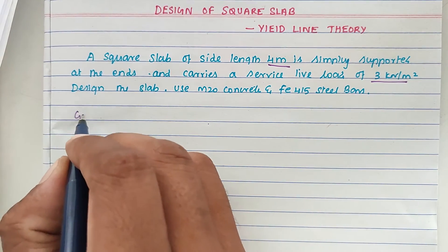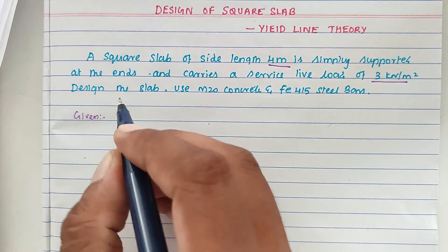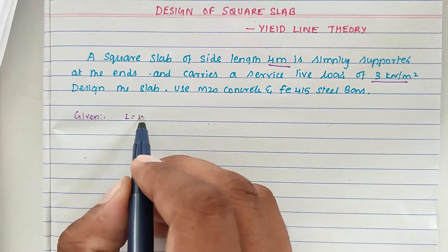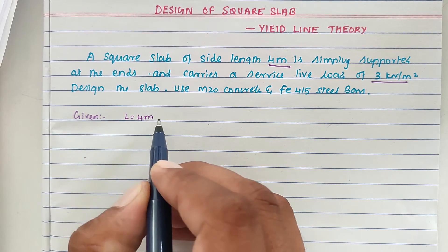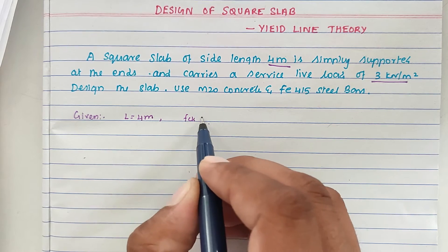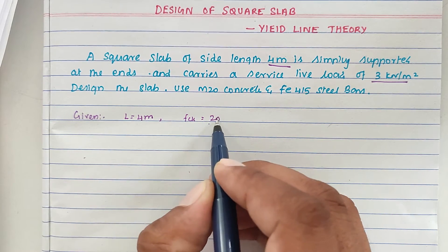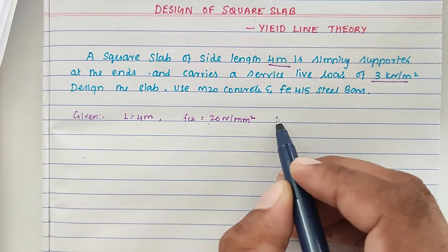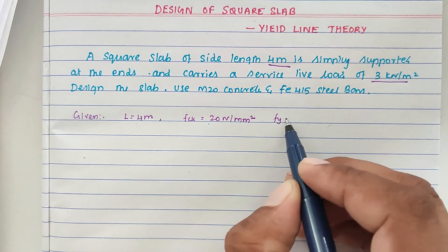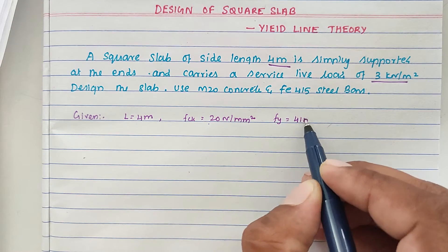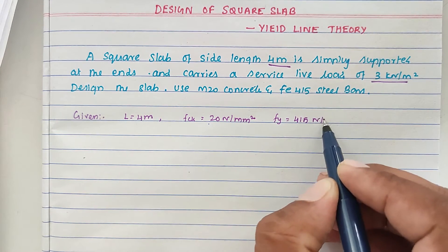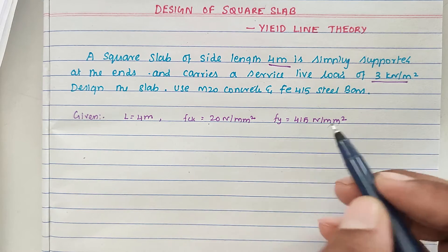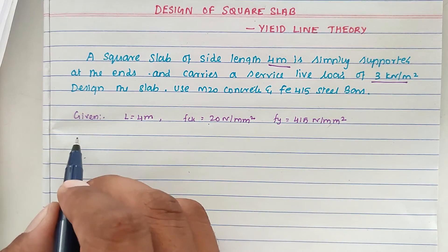The given values are: l = 4 meters, fck = 20 Newton per mm square, and fy = 415 Newton per mm square. These are the given values, so now we proceed to the solution.